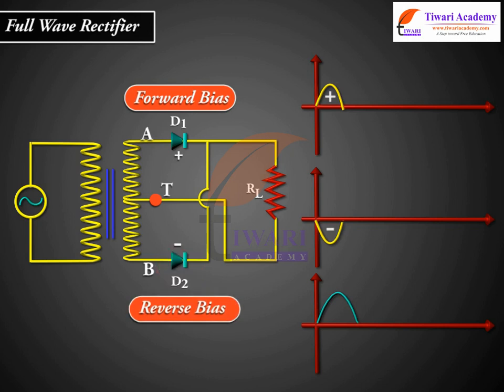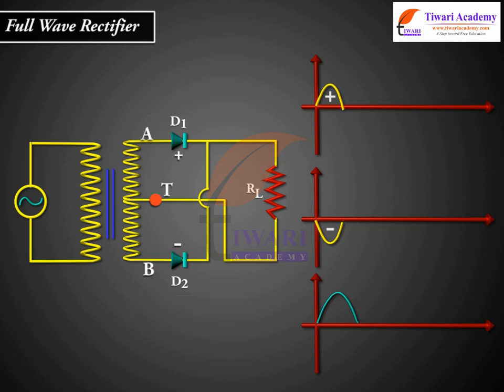During negative half cycle, the end B becomes positive with respect to the center tap.